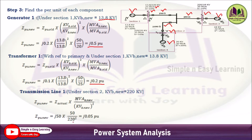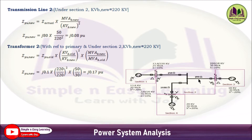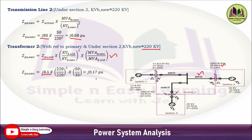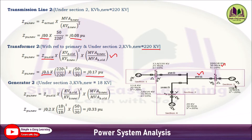For transmission line 2 (j80 ohm, section 2): j80 × 50/220² = j0.08 per unit. For transformer T2 (primary under section 2, rated 30 MVA, 220/18 kV): Z_pu_new = j0.1 × (220/220)² × (50/30) = j0.17 per unit. For generator G2 (section 3, base kV = 18 kV, 20% reactance): j0.2 × (18/18)² × (50/30) = j0.33 per unit.